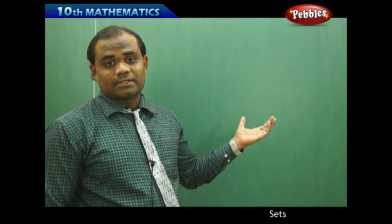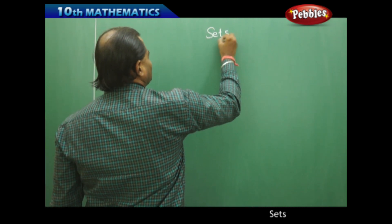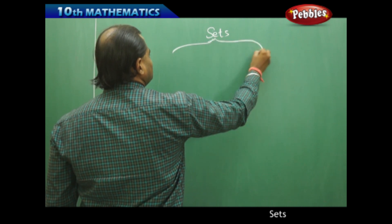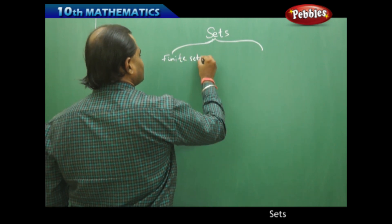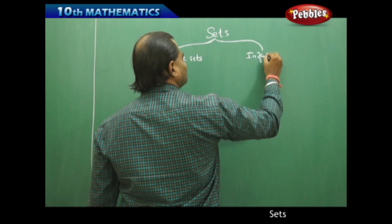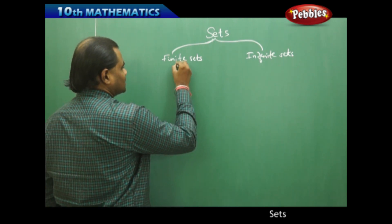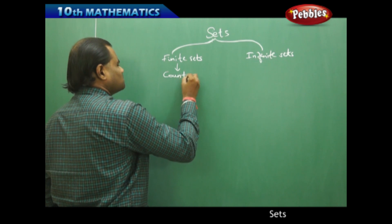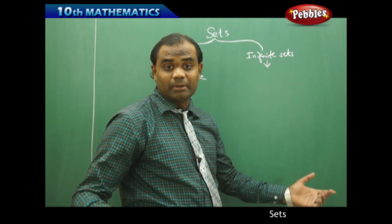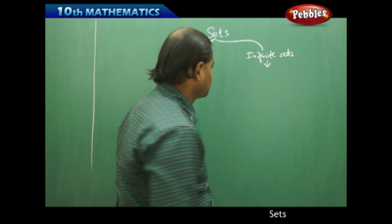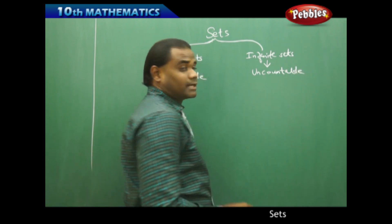Let's see the different types of sets through examples. Finite sets are sets which are countable, and infinite sets are sets which are not countable — they are infinitely many. The counting becomes limitless or uncountable.